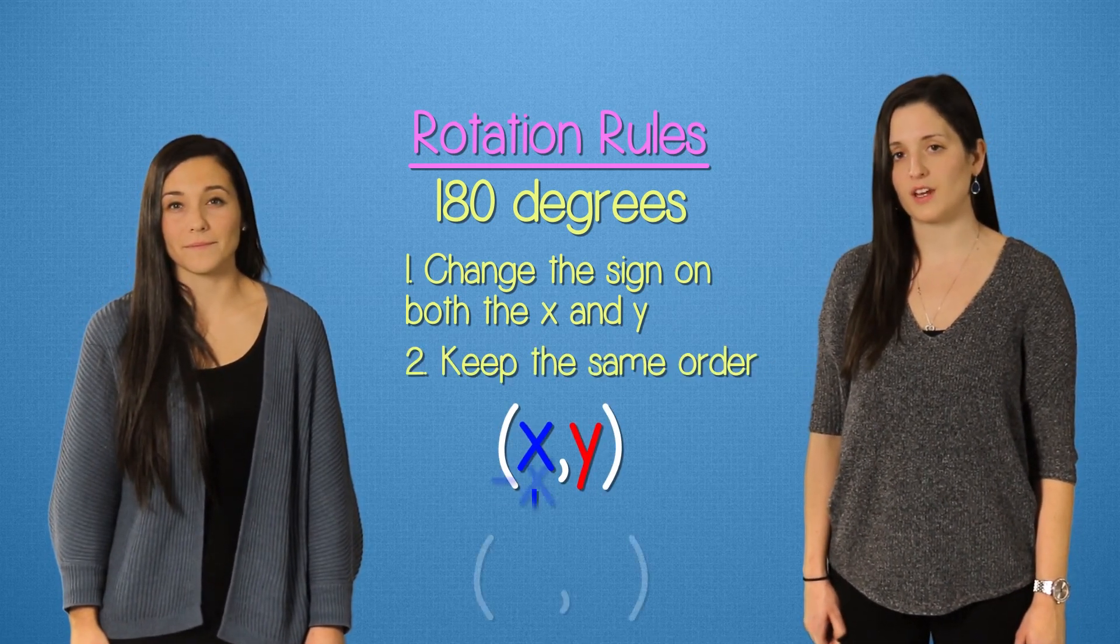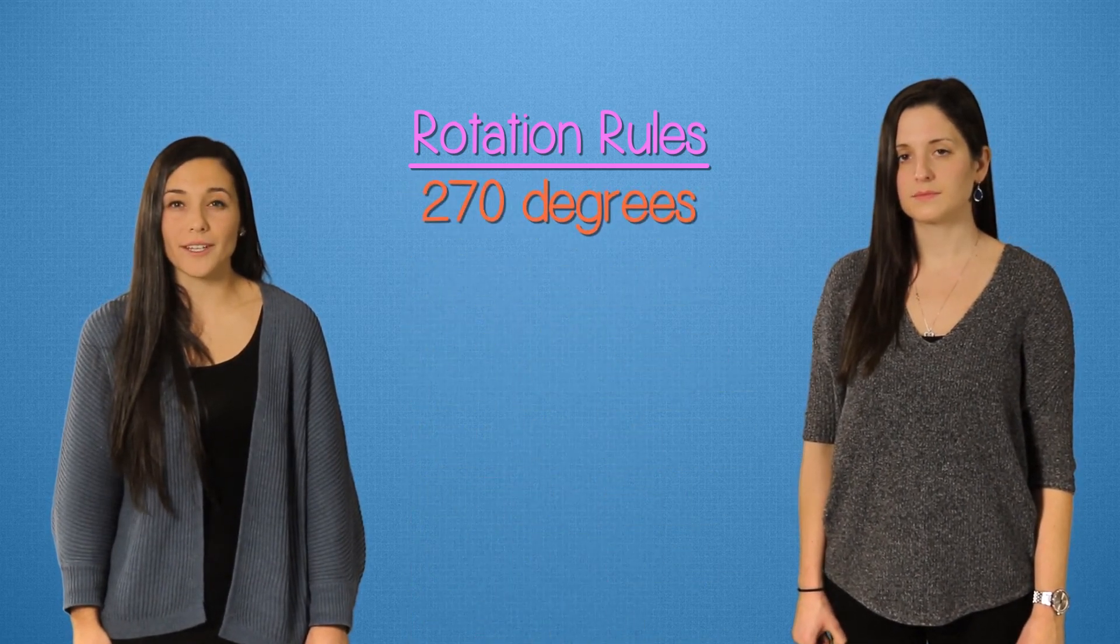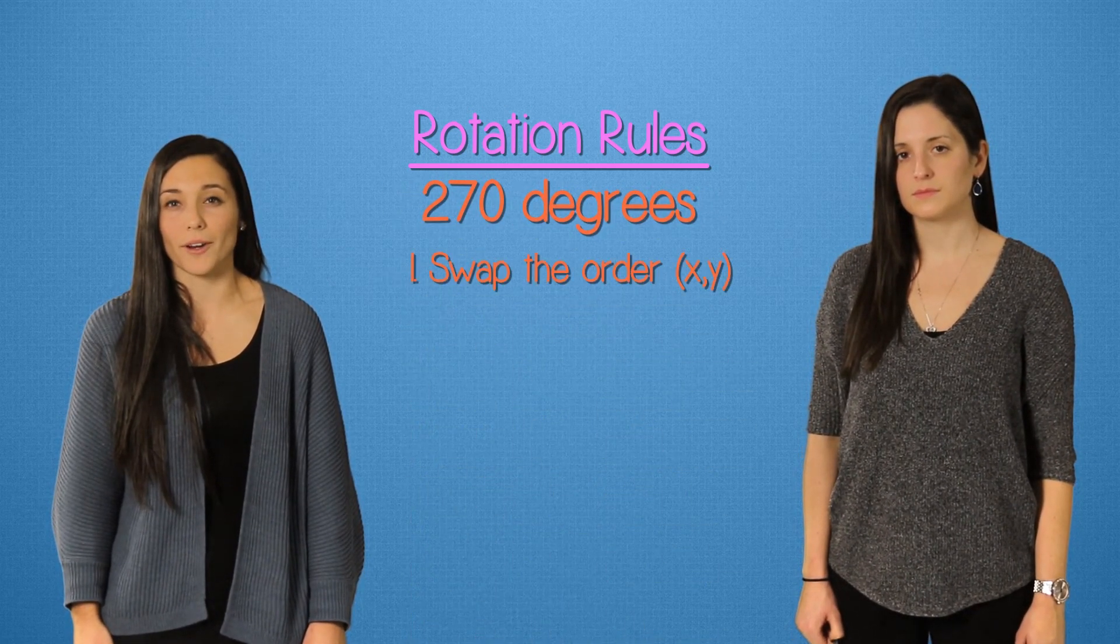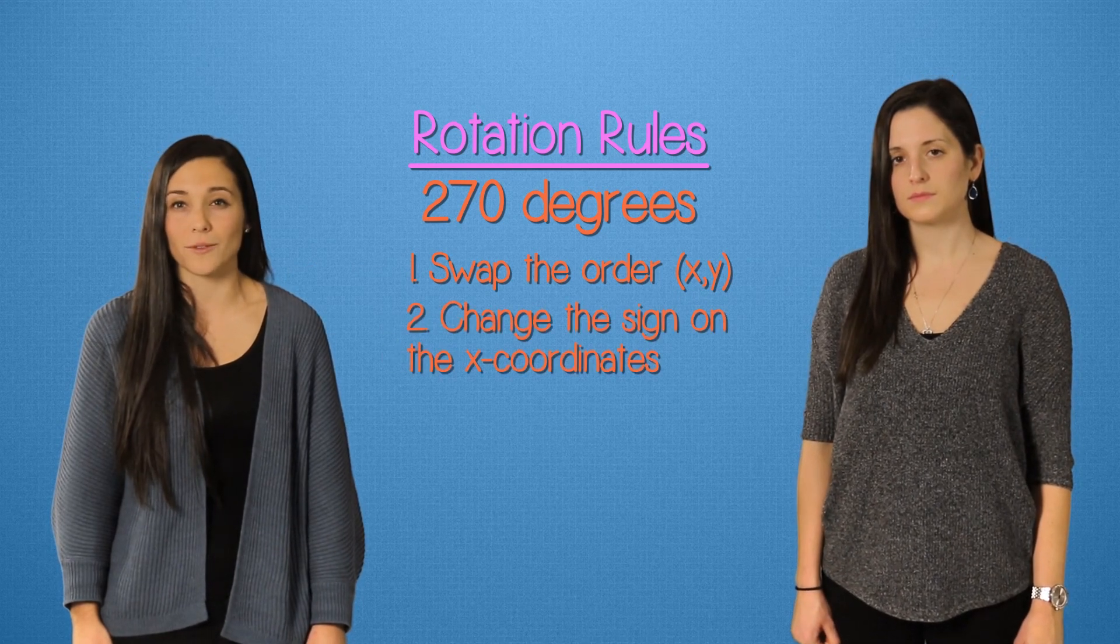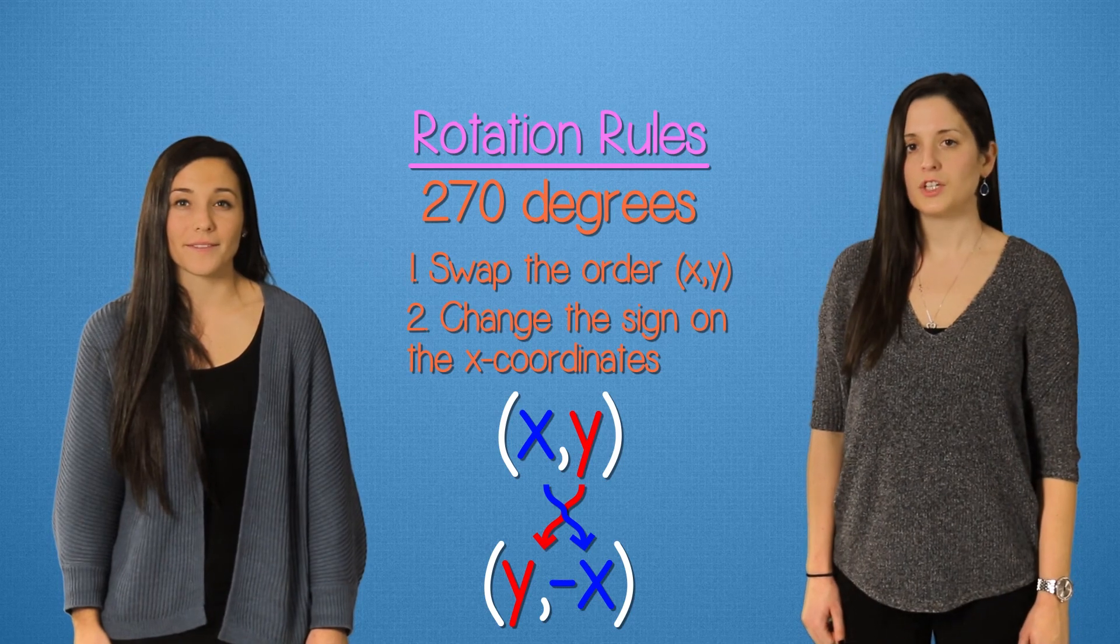When rotating a figure 270 degrees, we need to take each point and swap their order, as well as change the sign of the x-coordinates, so (x,y) becomes (-y,x). Let's try an example.